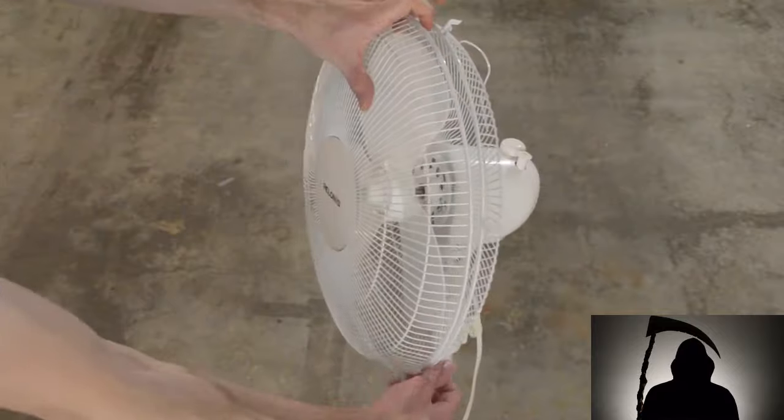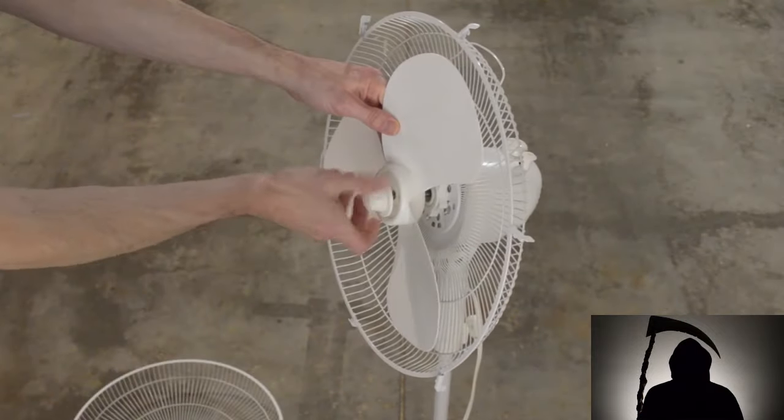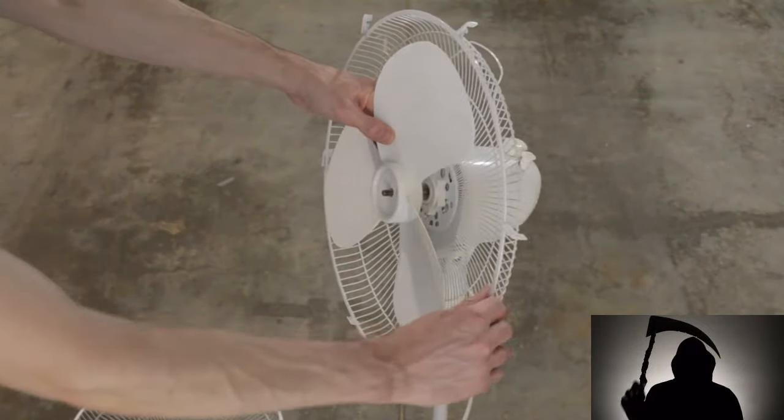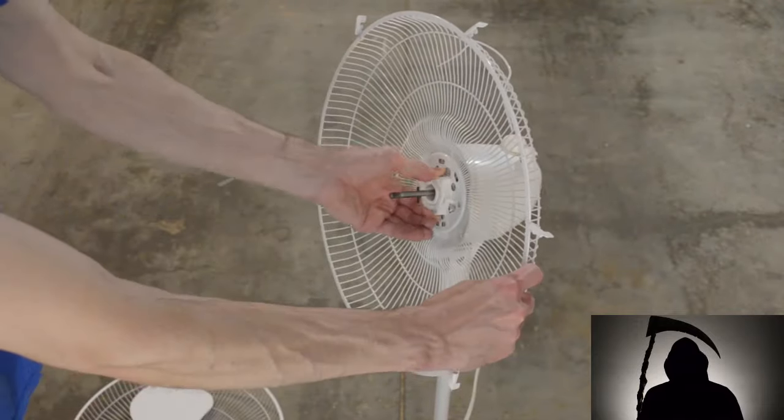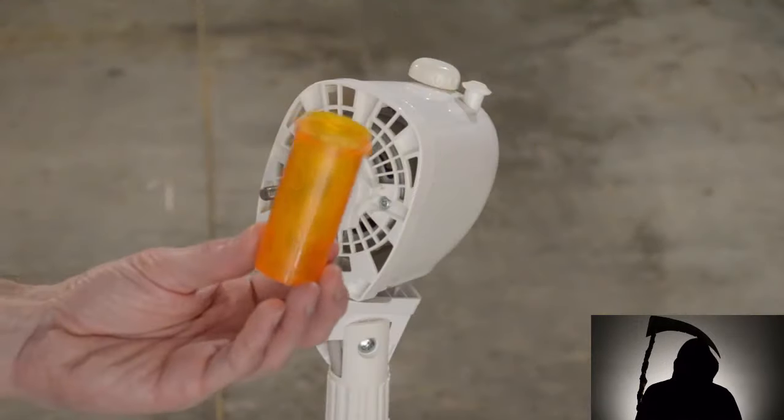Open the fan cage. Remove the fan cage. Unscrew the nut holding the fan on. Remove the fan blade. Unscrew the nut holding the cage. Take the cage off.